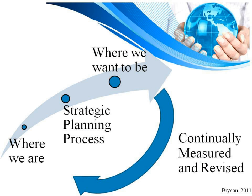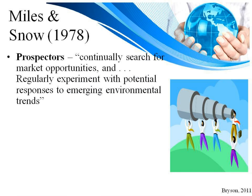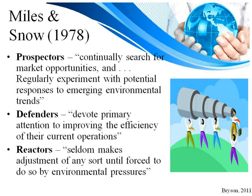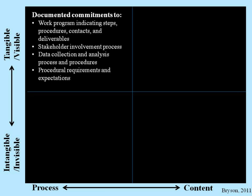As a graphic, we look at where we are, start a strategic planning process that leads us to where we want to be, and we're continually measuring and revising the strategic plan, which is a living, breathing document. Miles and Snow in 1978 described three types of individuals within the organization: prospectors continually search for market opportunities and regularly experiment with potential responses to emerging environmental trends; defenders devote primary attention to improving the efficiency of their current operations; and reactors seldom make adjustments of any sort until forced to do so by environmental pressure.